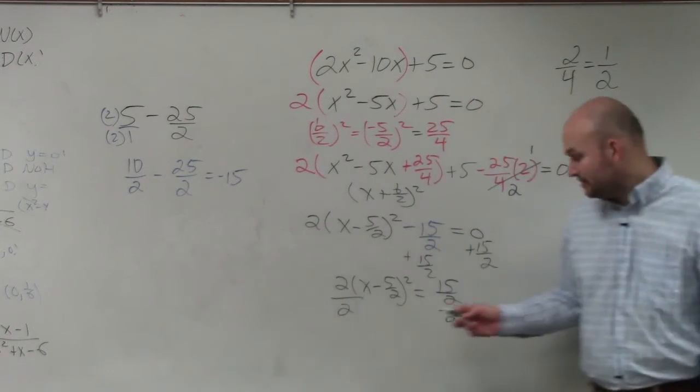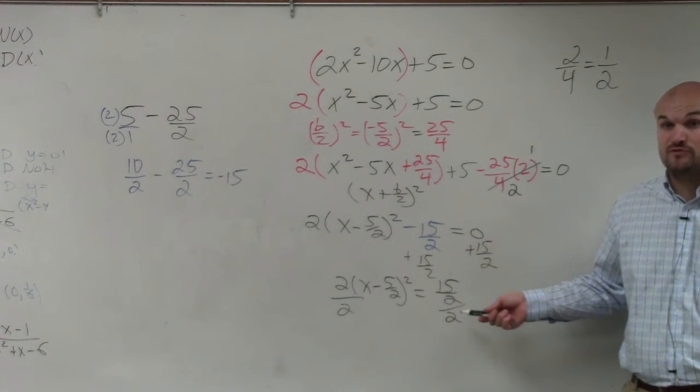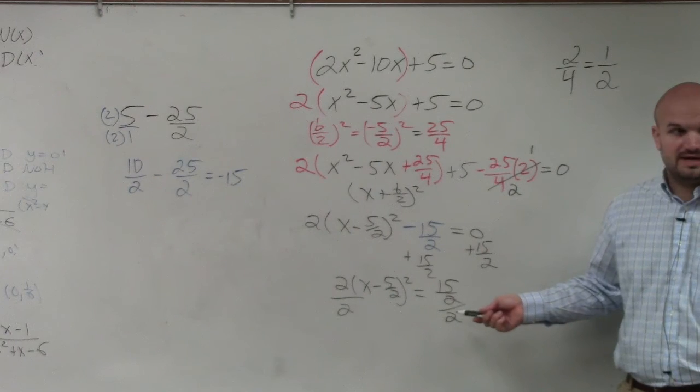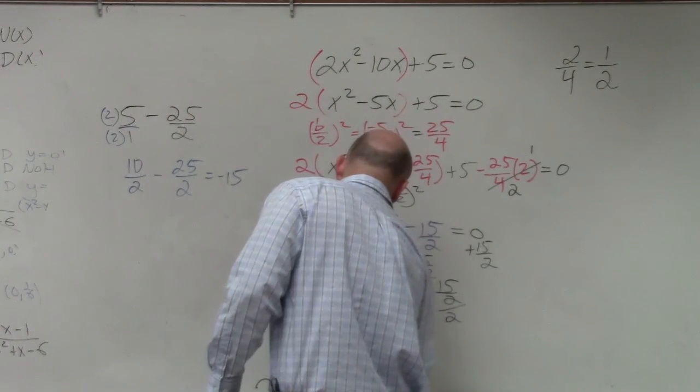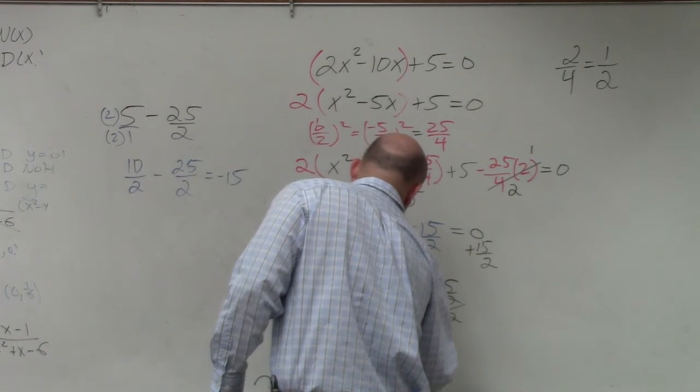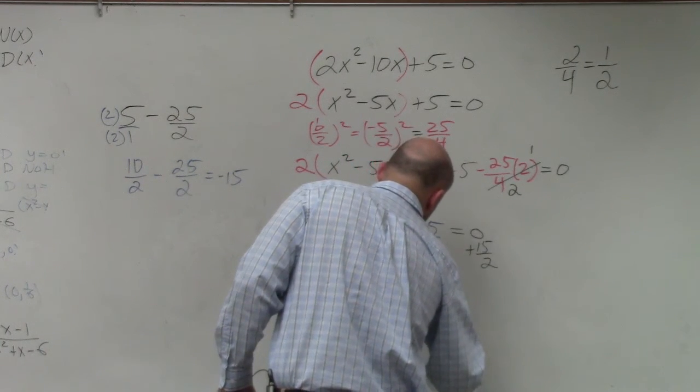Do I need to show you guys what this would be? Can you guys think about this? Multiplying by the reciprocal on the top and bottom would produce 15 over 4? Yes? Does everybody can see that in their head, kind of? So therefore, I have x minus 5 halves squared equals 15 over 4.